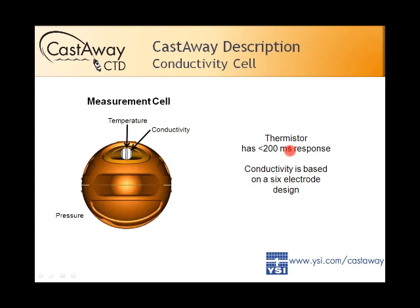It takes a little bit of effort to unlock the bayonet seal — it is a tight seal — but we've tested it with enough people that most anybody can do it with a little muscle pressure. This next slide shows the flow-through cell from an end view: there's a six-electrode configuration for conductivity sensing and a single electrode for temperature. They're fairly well protected inside because it's all encased.